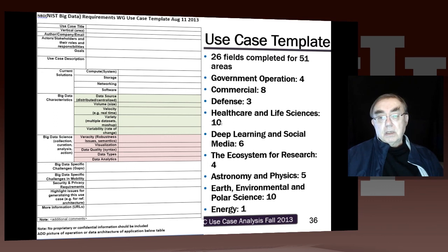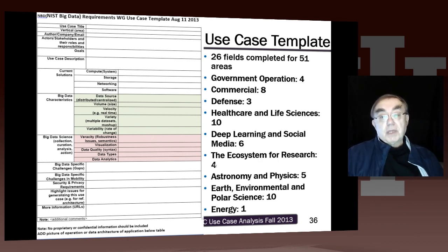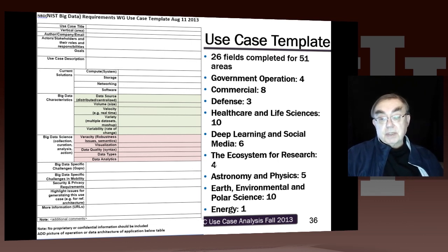Some of the healthcare use cases could be operational rather than research applications. Then we have deep learning and social media analysis — two very hot areas joined together. There are four cases I call the ecosystem for research, describing cross-cutting features. And then five in astronomy and physics, ten in Earth, environmental, and public science, and one in energy.